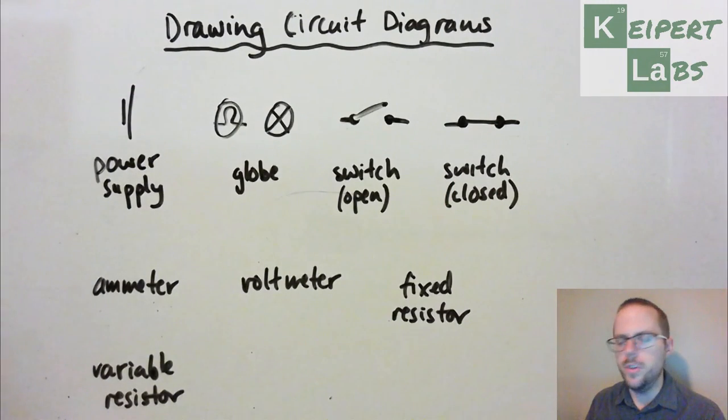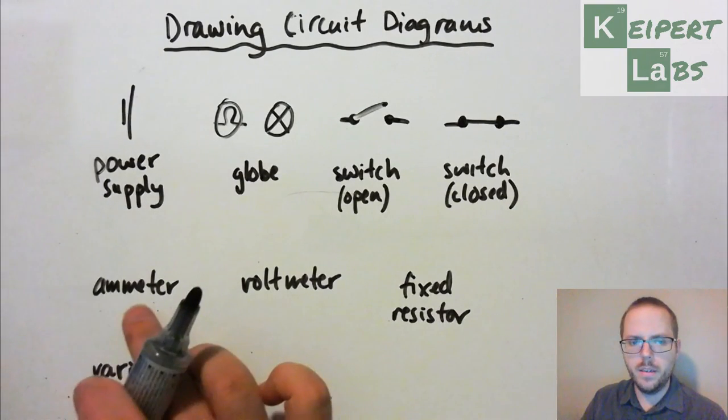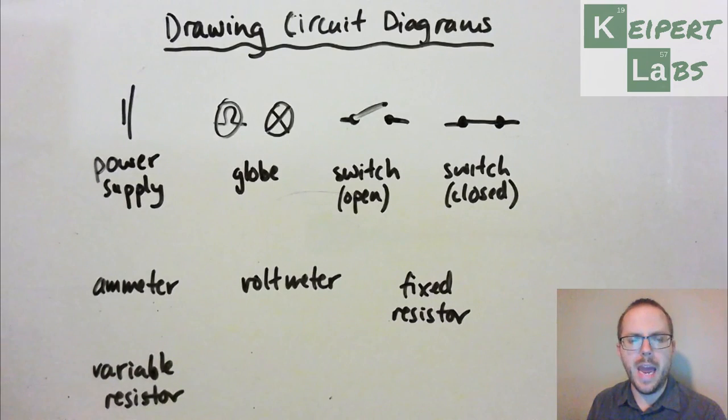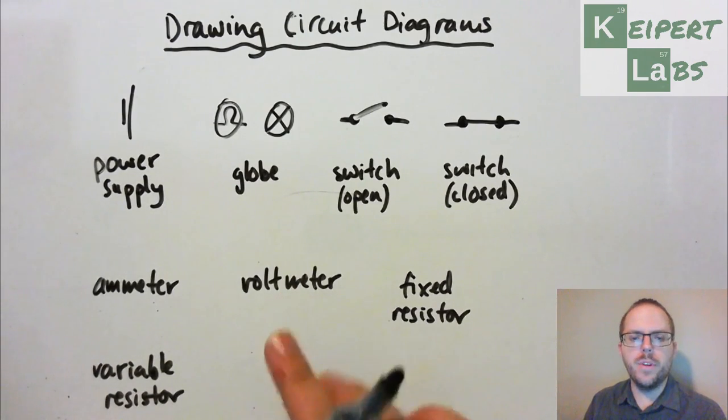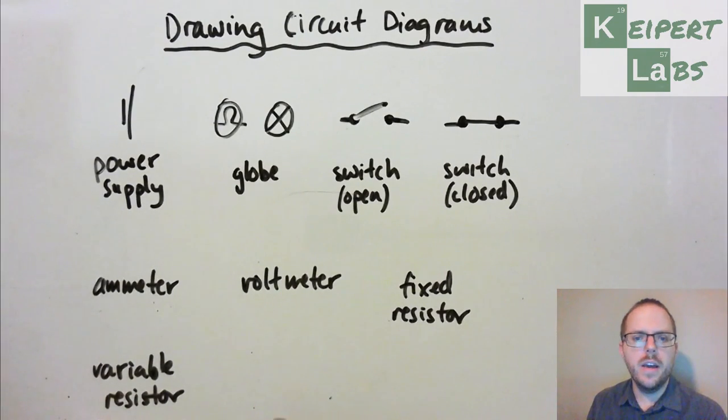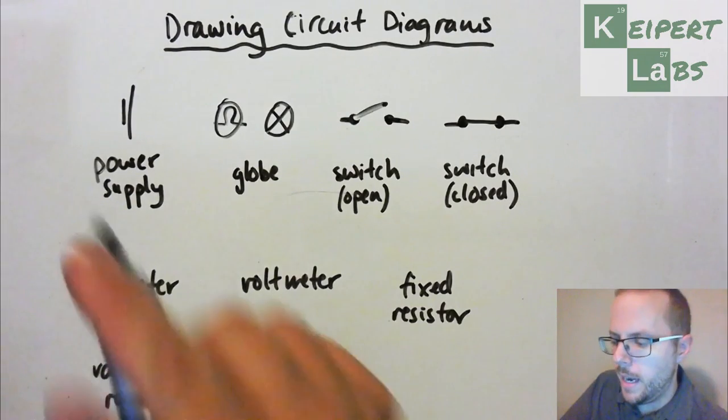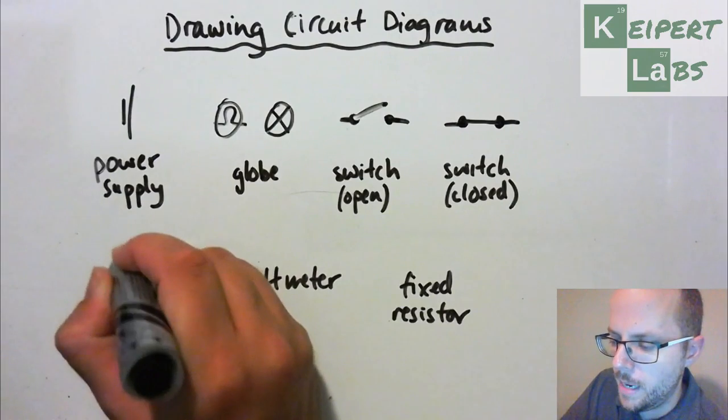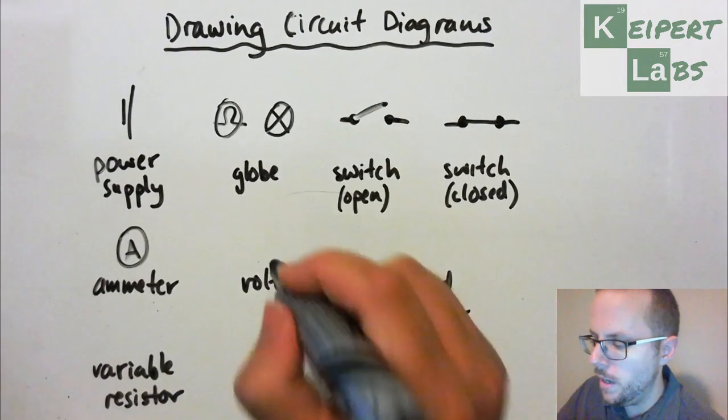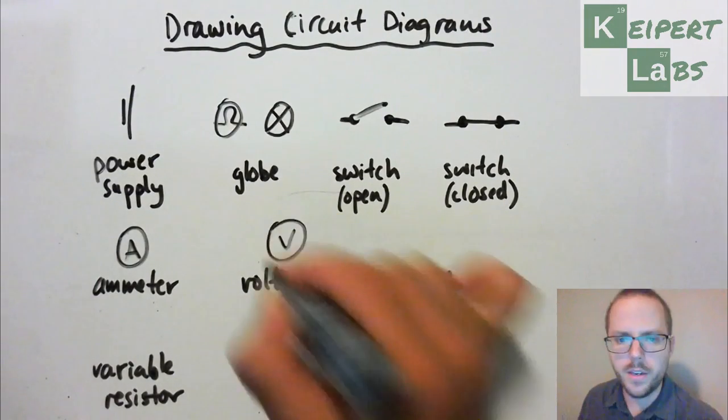Two items that we would use when we're measuring things in a circuit, one's called an ammeter, which helps to measure how many particles are flowing through our circuit, how much flow there is. And a voltmeter reflects just how much energy that flow is carrying, how hard it's being pushed through the circuit. And so an ammeter has a letter A inside a circle, a voltmeter has a letter V inside a circle.